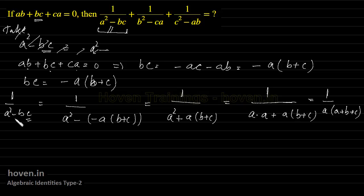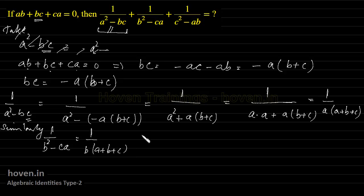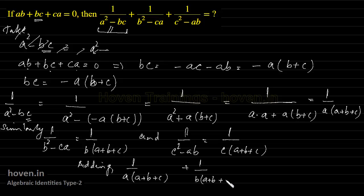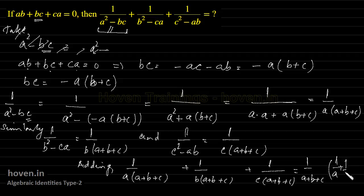So 1 by (a² minus bc) equals 1 by a(a+b+c). Similarly, 1 by (b² minus ca) equals 1 by b(a+b+c), and 1 by (c² minus ab) equals 1 by c(a+b+c). Adding all three, we get 1 by (a+b+c) times (1/a plus 1/b plus 1/c).